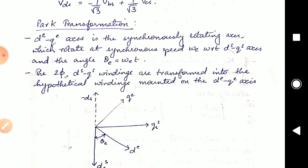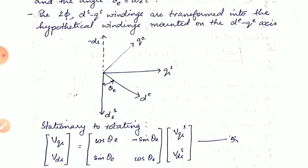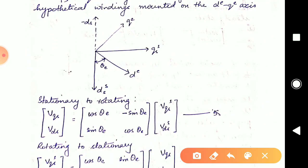Next, we move on to the Park transformation. From the Clark transformation, we have already obtained the two-phase stationary system. Now we are going to convert the two-phase stationary system into a two-phase synchronously rotating system. QSS and DSS are the stationary axes and QE, DE are the two-phase synchronously rotating axes.